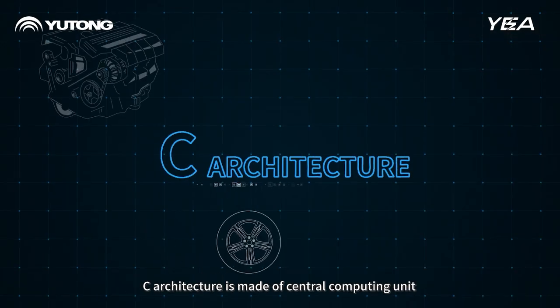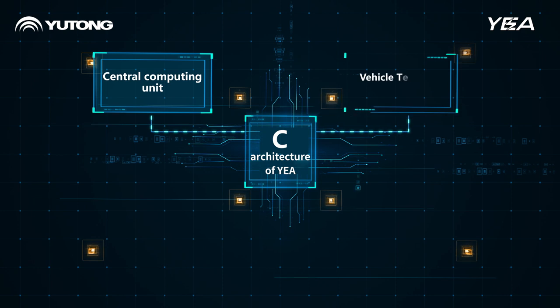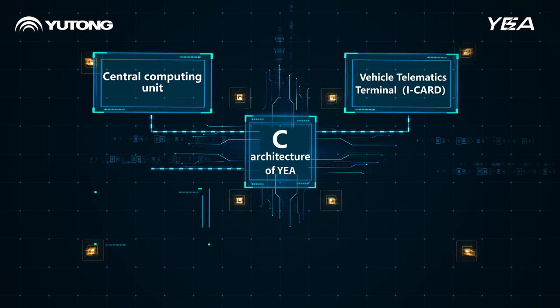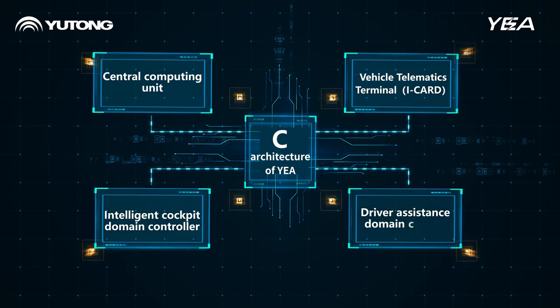C-Architecture is made of a central computing unit, multi-in-one controller, intelligent cockpit, and driver assistance domain controller.